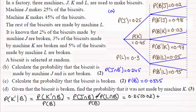And then plus, for the probability it came from L and was broken, it's going to be 0.3 times 0.05. All of this is divided then by the probability that the biscuit is broken, which we worked out in part C as 0.0335.